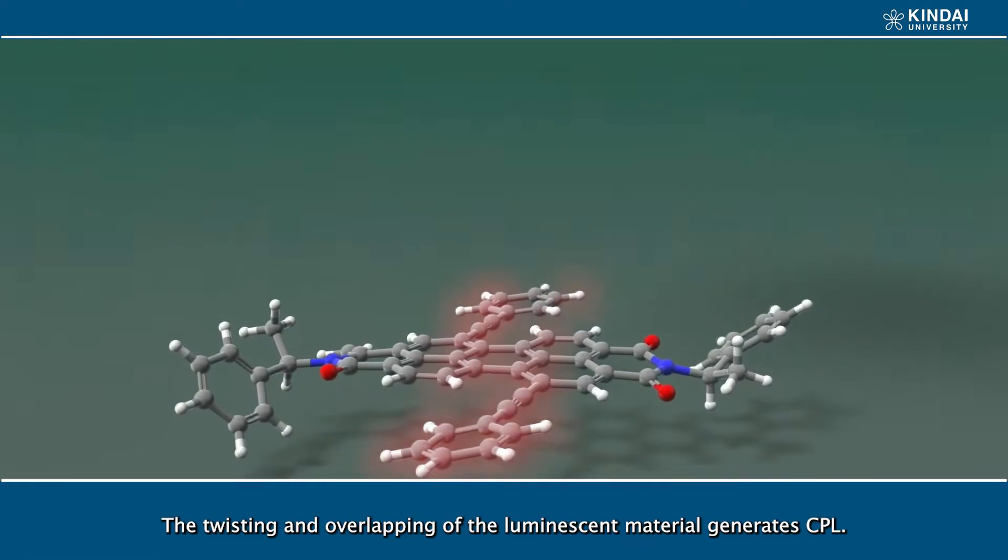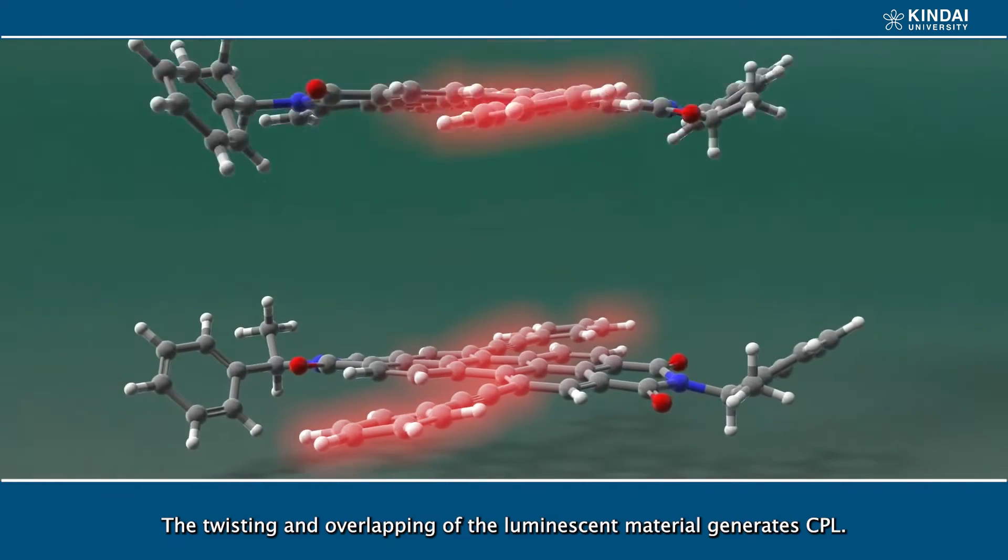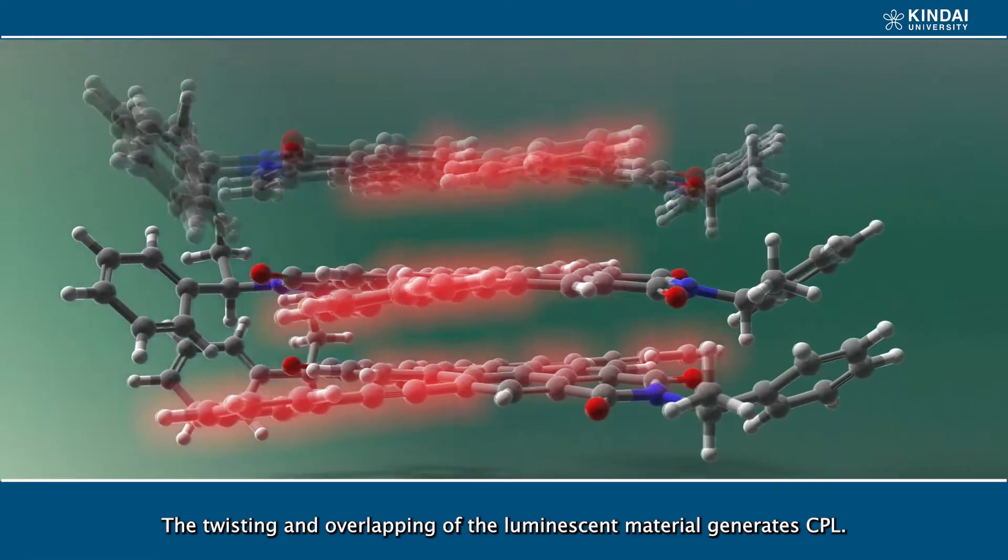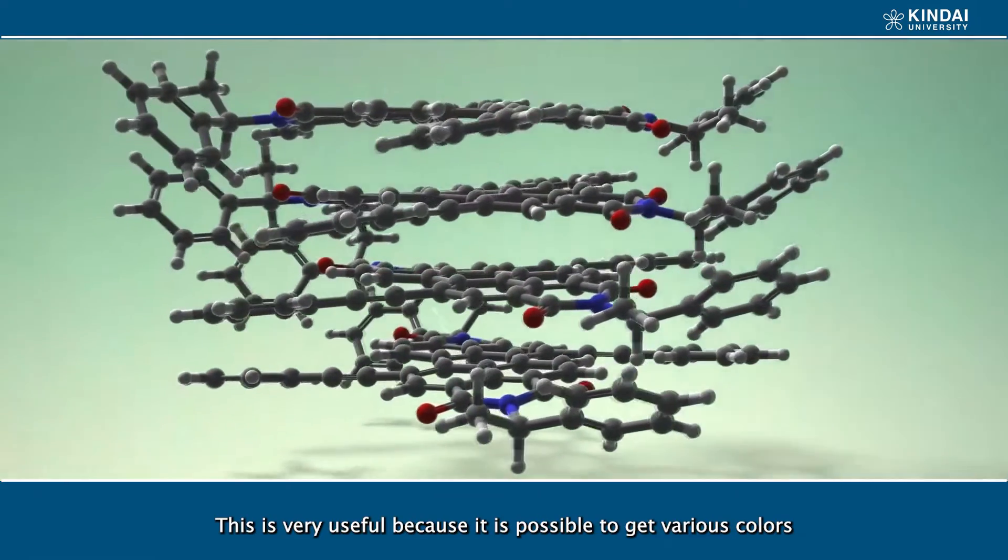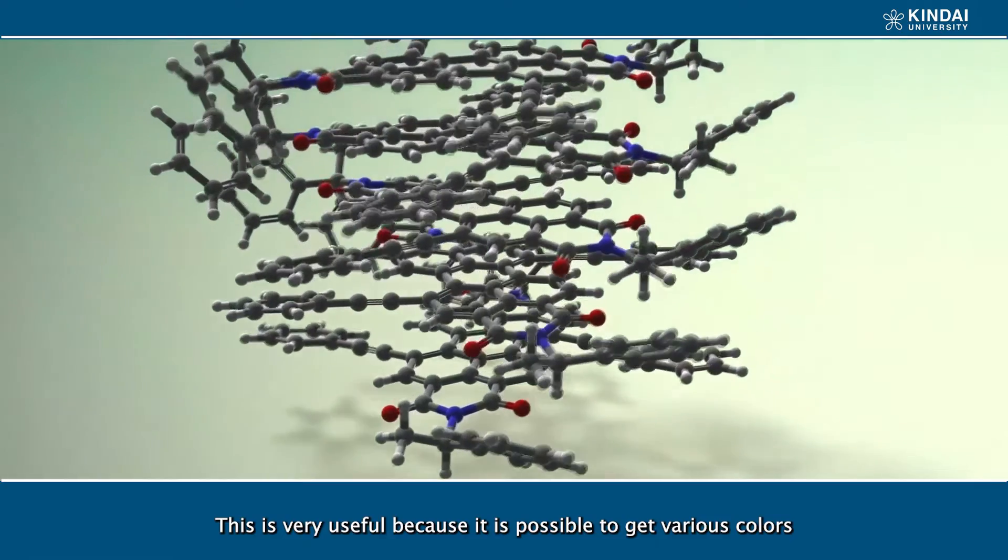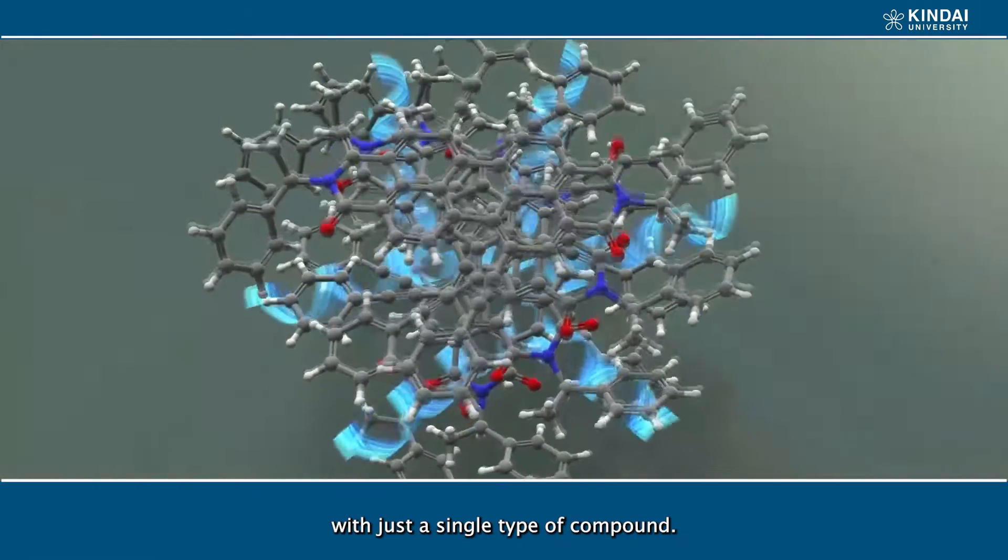The twisting and overlapping of the luminescent material generates CPL. This is very useful because it is possible to get various colors with just a single type of compound.